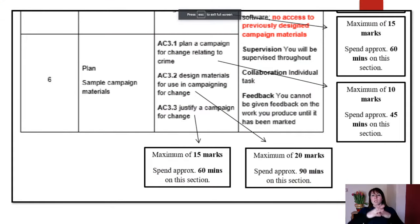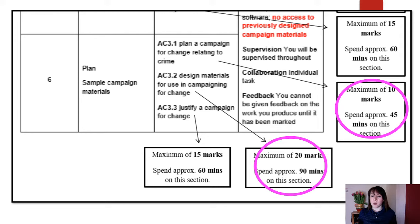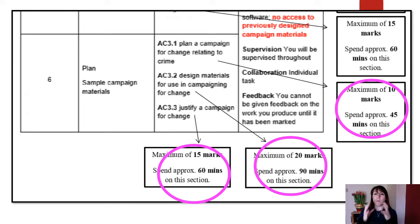Let's remind ourselves of what we are doing. 3.1 is planning a campaign for change — a maximum of 10 marks, with approximately 45 minutes to complete it. Section 2 is designing and making the materials, worth approximately 20 marks with an hour and a half. Finally, you have to justify your campaign — why you chose it, the logo, the name, the colour scheme, etc. That is worth 15 marks with approximately an hour. This section is worth a considerable amount of marks and you get considerable time to do it.